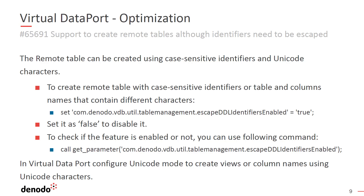You can now create remote tables, regular tables, and columns using case sensitive identifiers and Unicode characters. To use this new feature, you must set the property listed in the slide to true or false to disable. You can also check whether the feature is enabled by using the get parameter stored procedure. Please note that if you need to create base views or column names using Unicode characters, you have to configure the virtual data port server in Unicode mode.